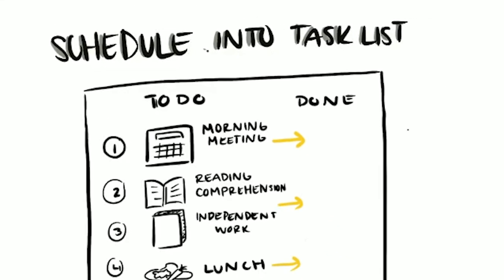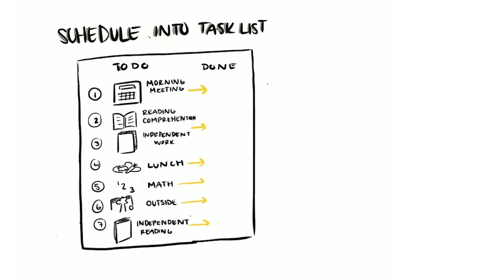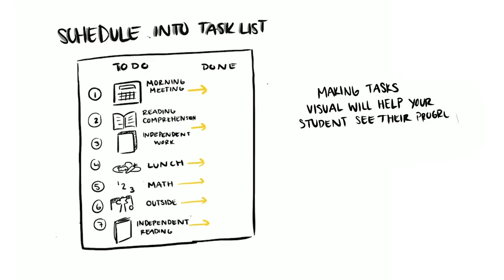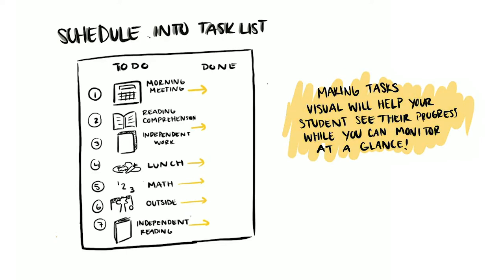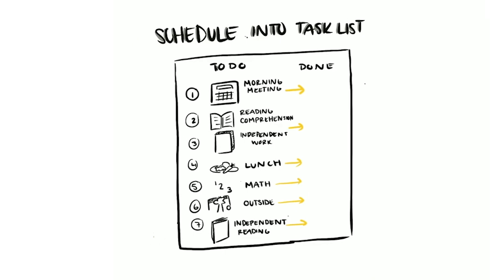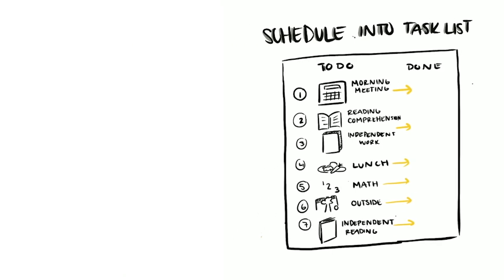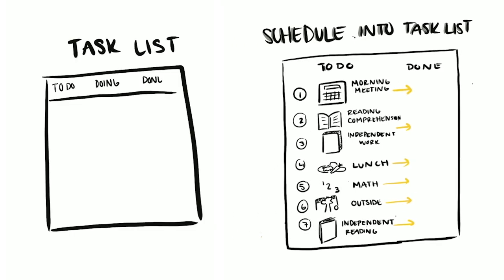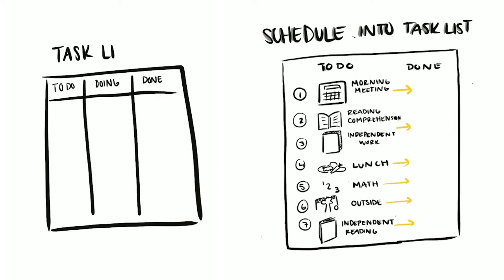This is a strategy used in classrooms for students with autism, and it actually benefits students across the board. There's definitely a sense of completion and accomplishment that comes from this. Another way you can do this is through a to-do list, and a modified version of that is a Kanban board.